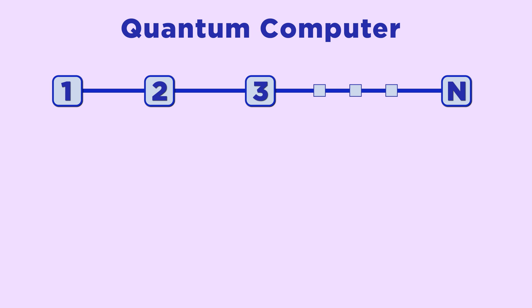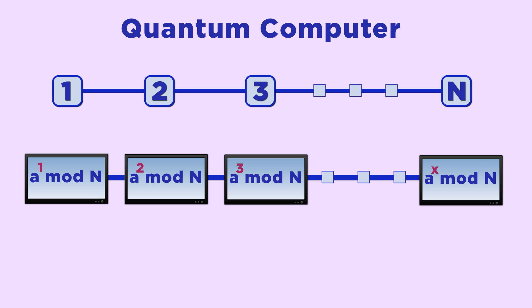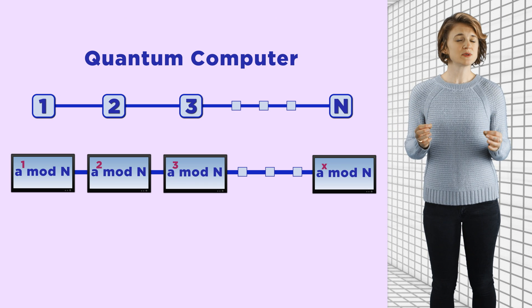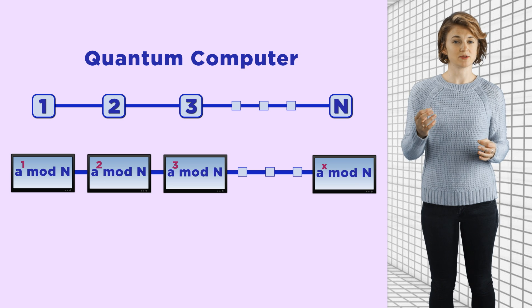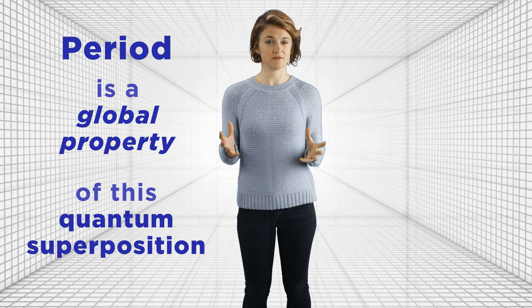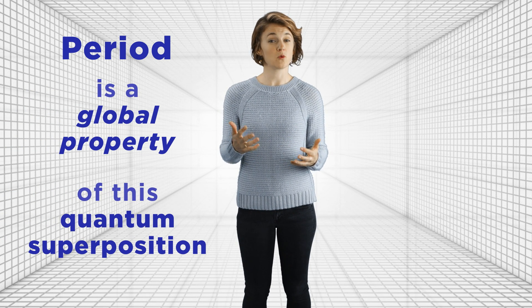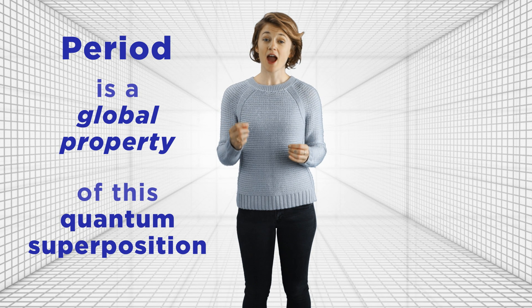We begin with n different states representing the numbers 1 through n. Then for each state, we compute a to the x mod n, where x is the number of the state. So now the states are a to the 1 mod n, a to the 2 mod n, a to the 3 mod n, and so on. Then we just look for the smallest one that says 1 and we're done, right? That's when we run into the same problem as before. We can't just scan all the states at once. When we look at the result of a quantum computation, it just shows one random state, which isn't very helpful. But there's something different about this current problem. Something that will help us. The period is a global property of this quantum superposition. It's not just a special fact about one or two of the basic states. It's a fact about this entire wave of numbers created by the superposition. How often it repeats. That's the period.